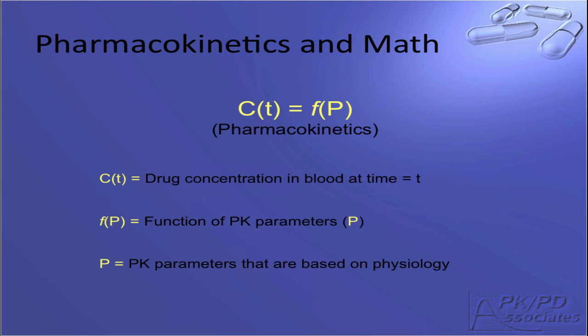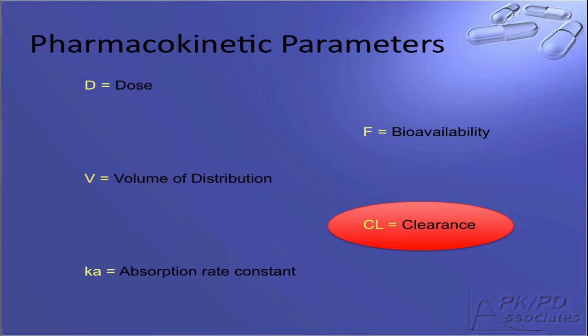Now that we understand the physiology, we can relate it to the mathematics. The drug concentration in the body is simply a function of pharmacokinetic parameters based on physiology. The pharmacokinetic parameter clearance is controlled by the physiology of the liver, kidney, and lungs.